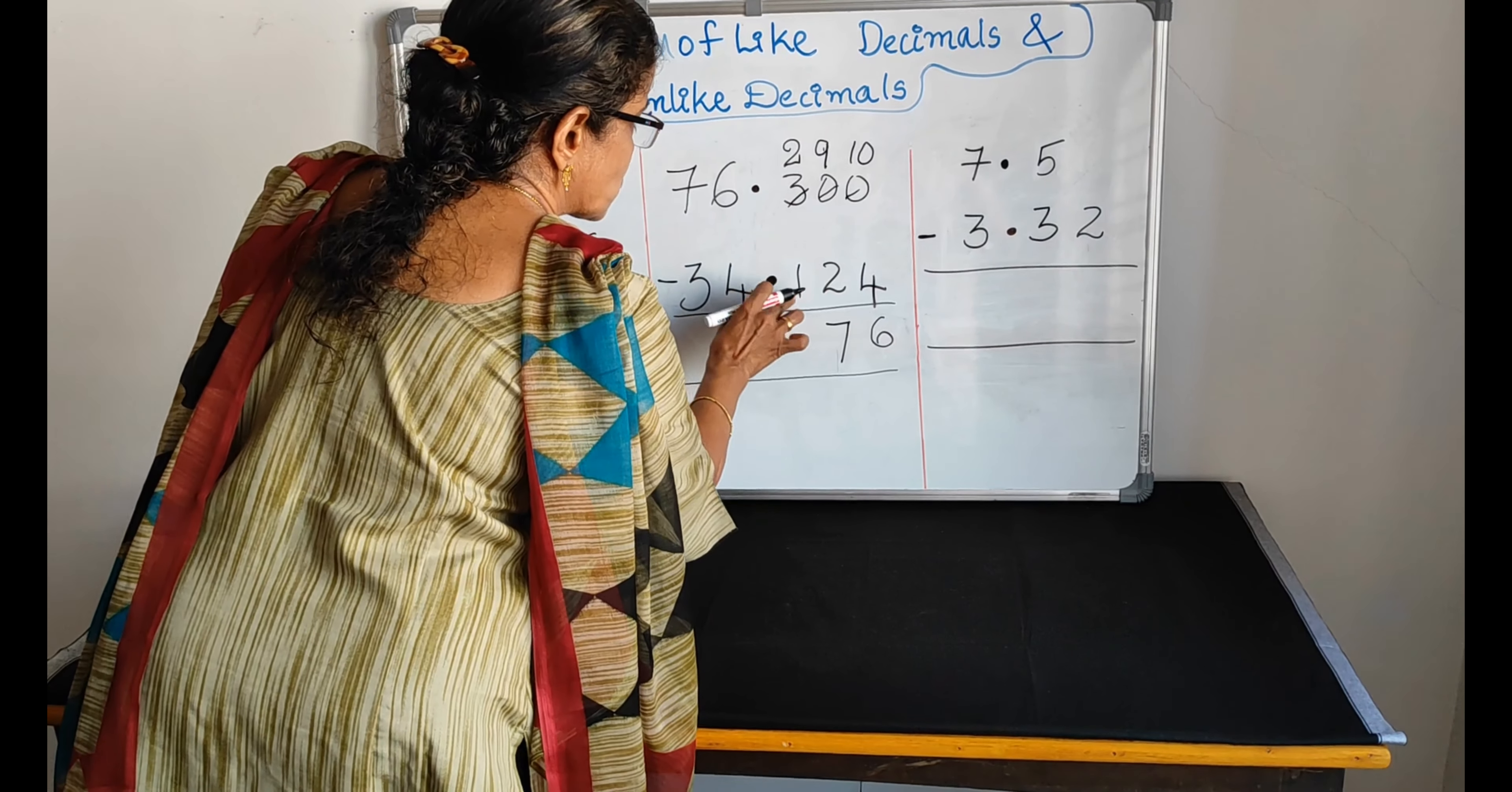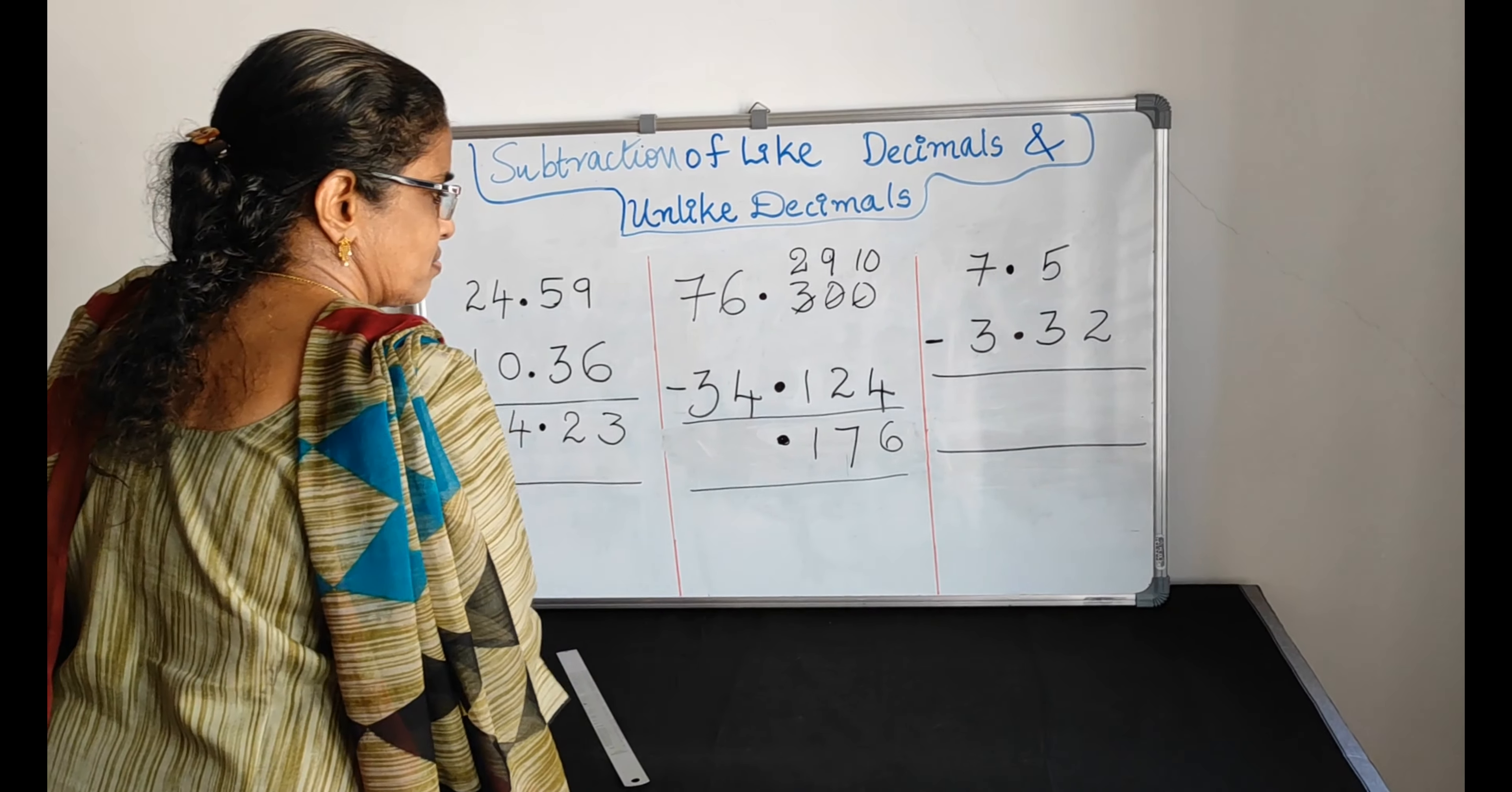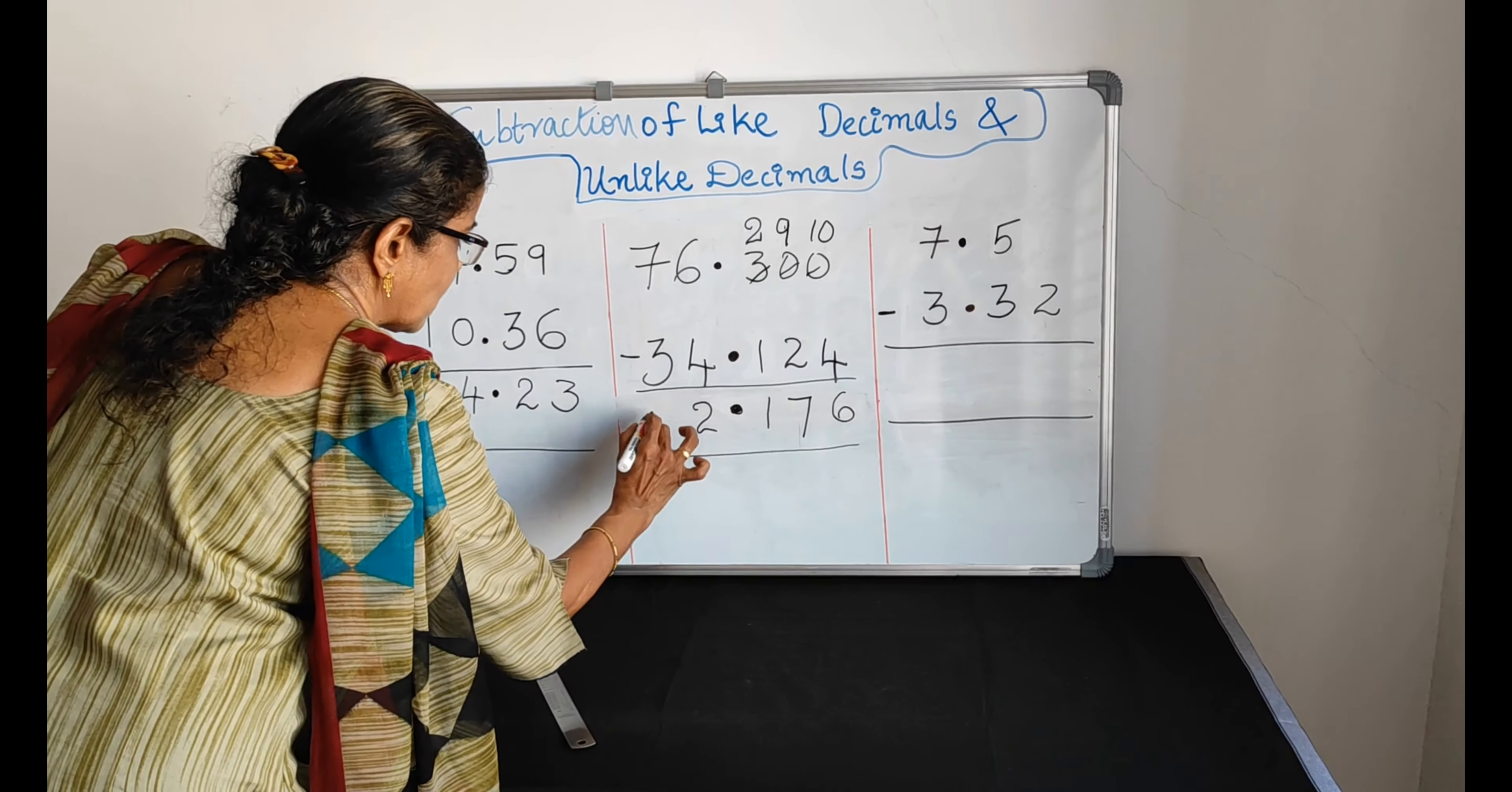From the 10 we are taking 1 to here. So we are taking 1 from 10. So it becomes 9. Here that 1 comes. It becomes 10. Now very simple. 10 minus 4, which is 6.